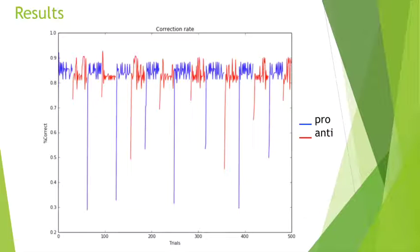It's obvious that at the point of switches, both from pro to anti and from anti to pro, there are significant correct rate drops.